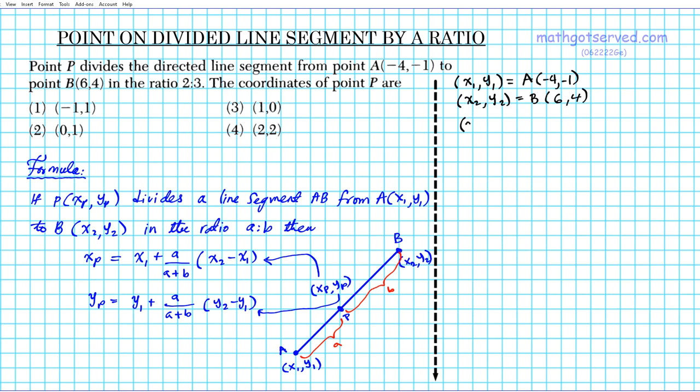And then what we're looking for is X sub P, Y sub P, that point that divides segment AB, and the ratio 2 to 3. So we don't know what that is. And we know that the ratio A to B is 2 to 3.